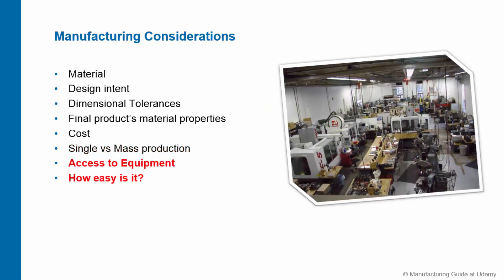Finally, access to equipment and how easy it is for you. Do you have a machine shop in your school or workplace? Great — use that to your advantage. Do you have a 3D printer or are you willing to spend $1,500 to buy a good one? You have to basically assess your situation and find out what is easy for you. As long as the product quality is not affected, choose the path of least resistance.